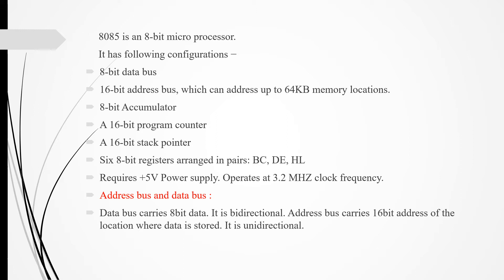The address bus can address up to 64 KB of memory locations. It has an 8-bit accumulator, a 16-bit program counter, a 16-bit stack pointer, and 6 general-purpose 8-bit registers arranged in pairs: BC, DE, and HL. It requires a +5 volt power supply and operates at a 3.2 MHz clock frequency.